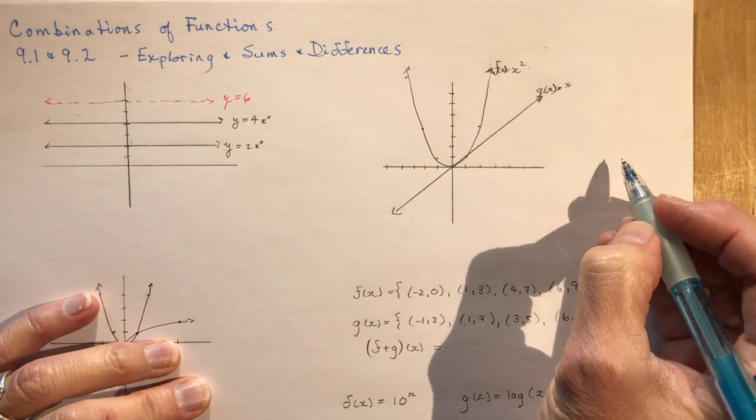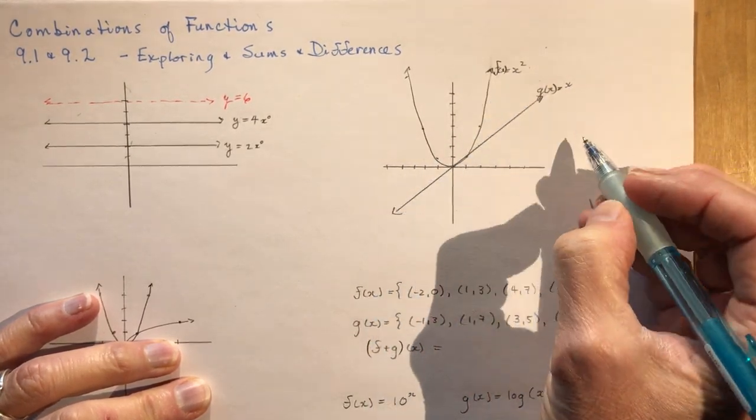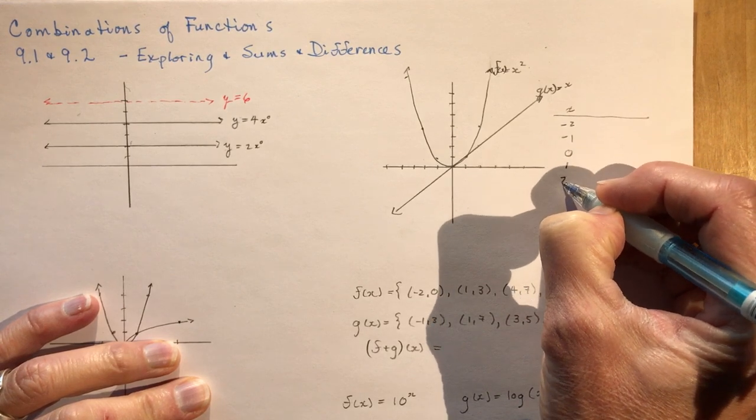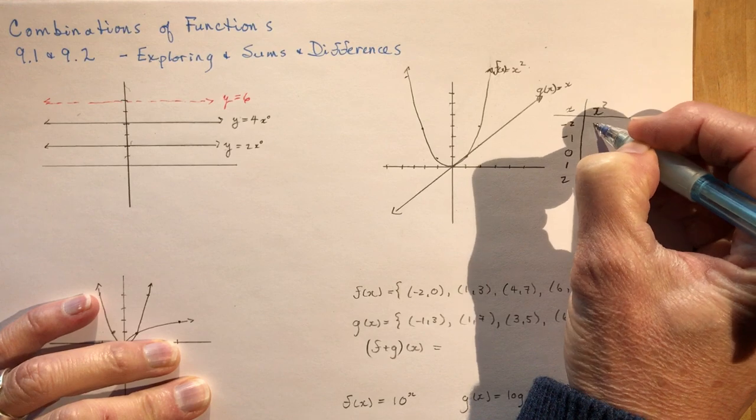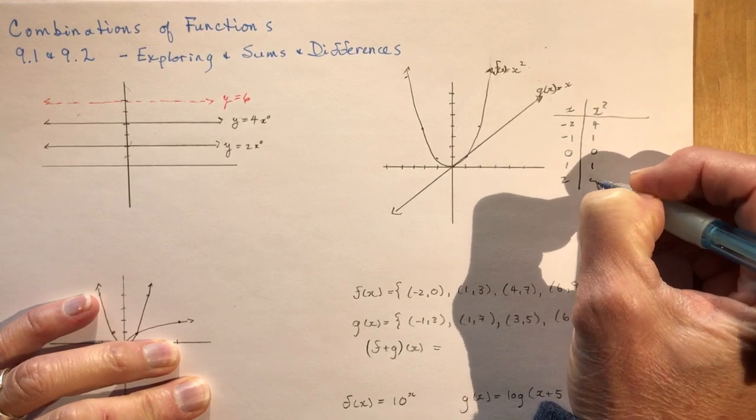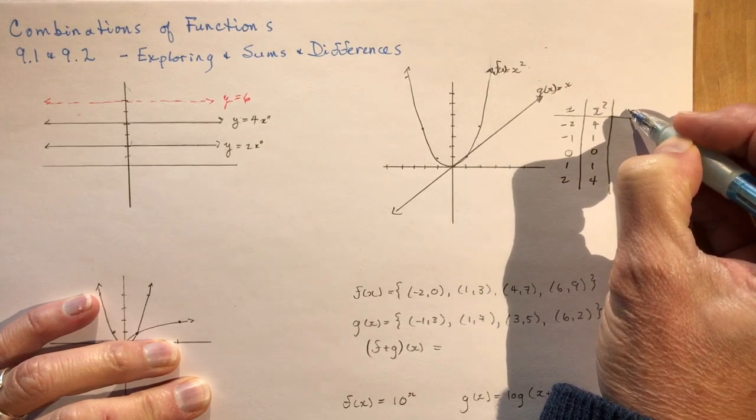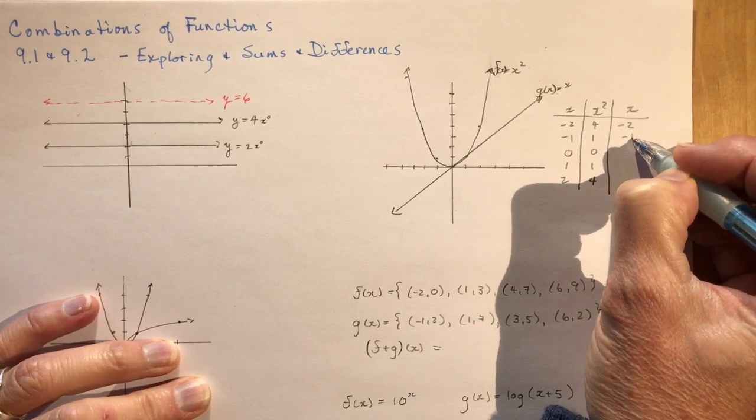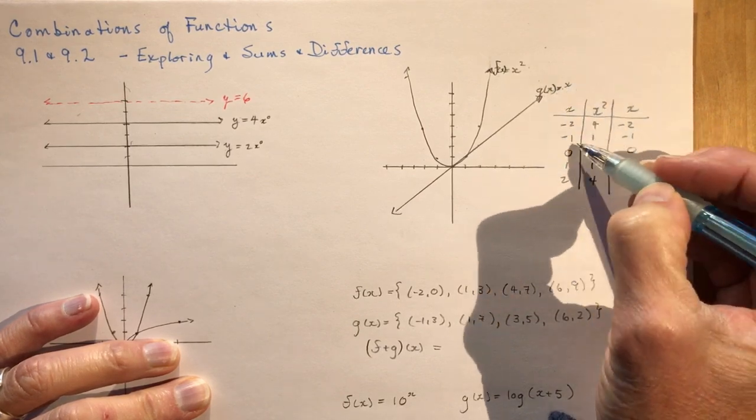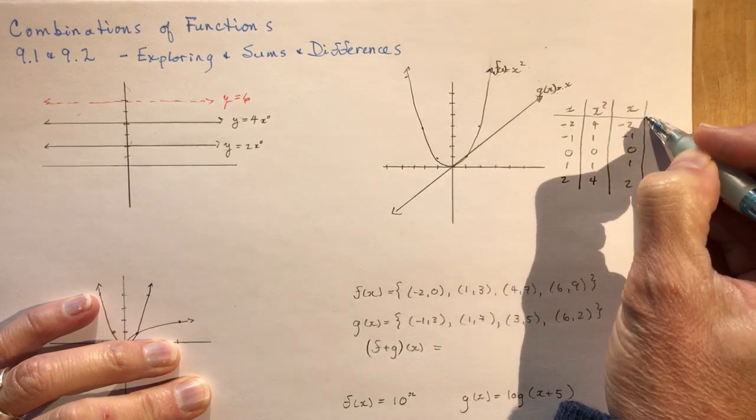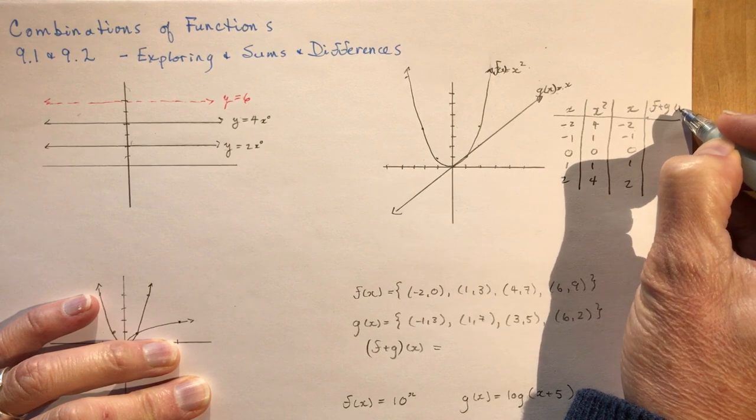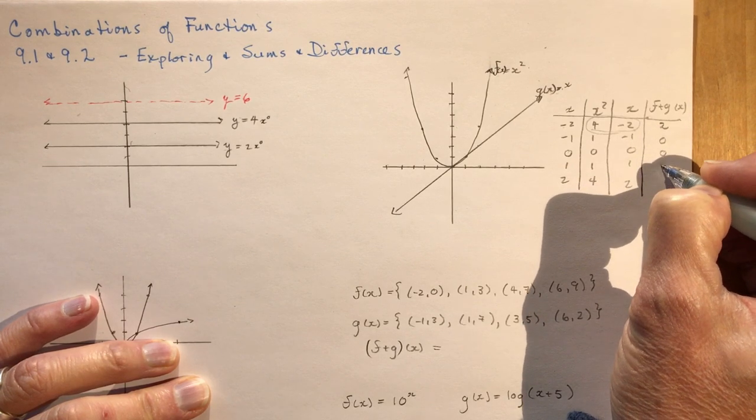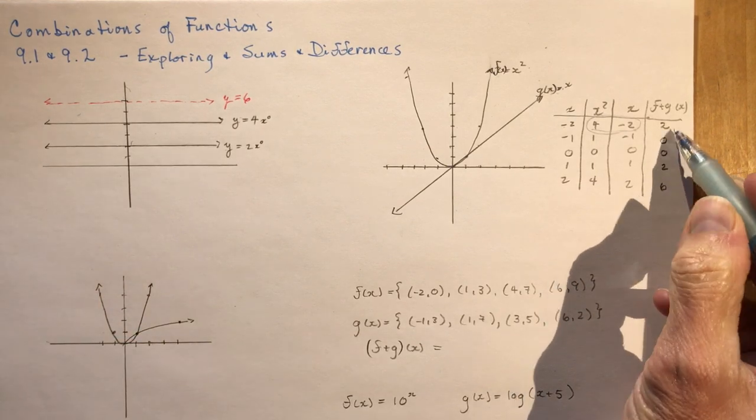There's two ways of looking at this. I can make a table of values for x squared. Let's use x values of minus 2, minus 1, 0, 1, and 2. So that would be 4, 1, 0, 1, and 4. And what would the g at x be? So this would be minus 2, minus 1, 0, 1, and 2. Now if I wanted to add them together, so if I did f plus g at x, all I'd have to do is combine these two numbers together. So 4 minus 2 is 2, 1 minus 1 is 0, 0 plus 0 is 0, 1 and 1 is 2, and 4 and 2 is 6.